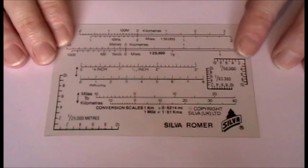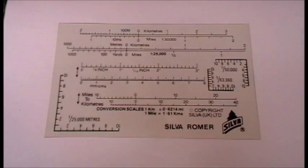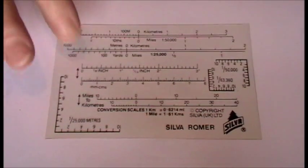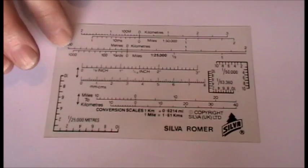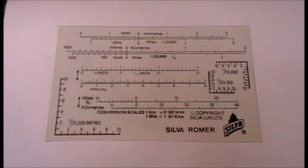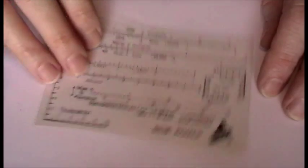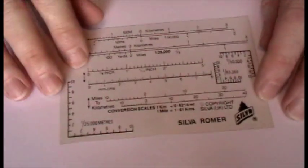When you're working with map grid references, it's essential to get a romer. You've got scales on your actual compass itself, but I think it's always best to get a separate romer - much easier to work with.